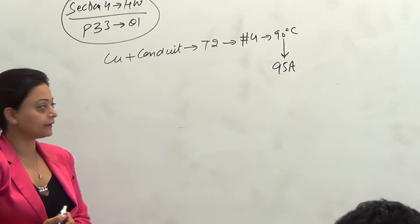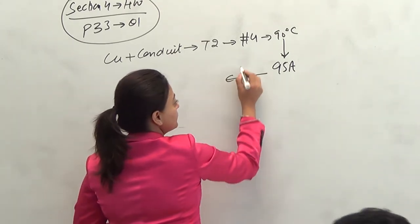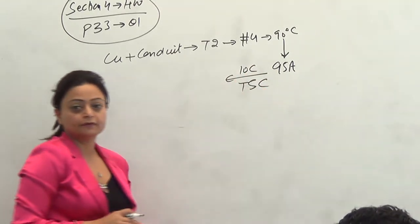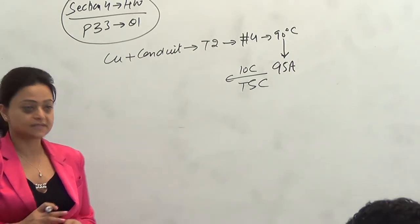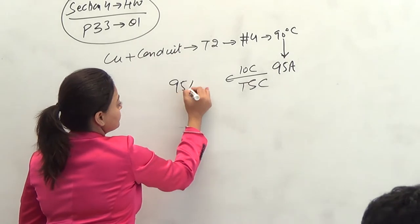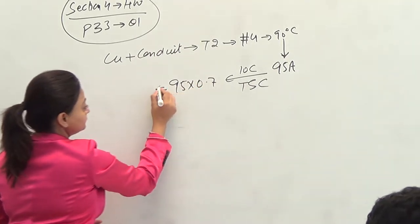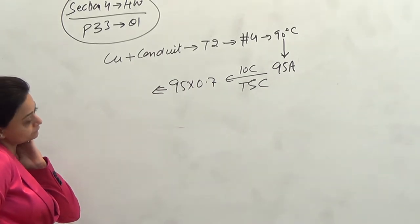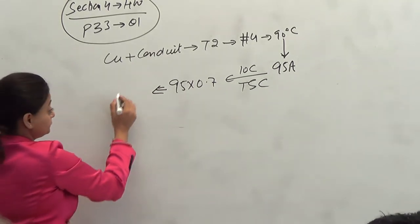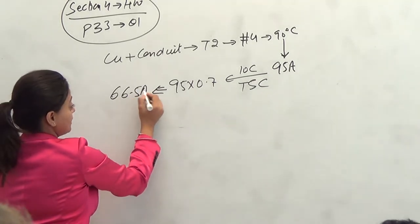How many wires are there? 10 wires. So, I will need it using Table 5C. What is the derating factor? 70%. So, 95 times 0.7 leads to? 66.5 amps.